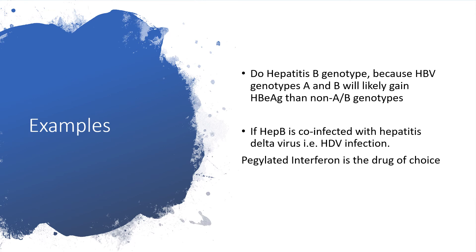We need to do hepatitis B genotyping before administering PEG interferon alpha 2a. Hepatitis B virus genotypes A and B are more likely to achieve hepatitis B envelope antigen loss than non-A and non-B genotypes. If hepatitis B is co-infected with hepatitis D virus — since hepatitis D cannot complete its replication without hepatitis B — PEG interferon is the drug of choice in the face of hepatitis D co-infection with hepatitis B.